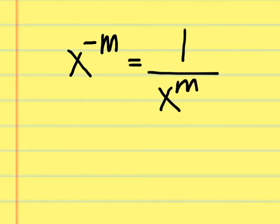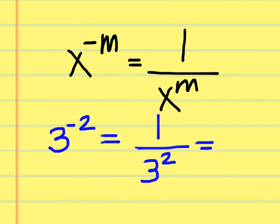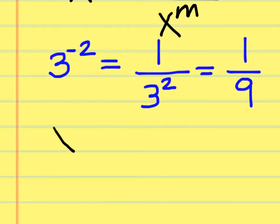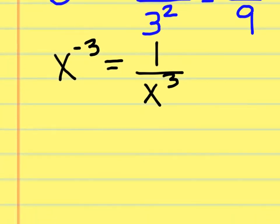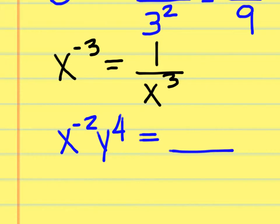Rule 5: negative exponents. This rule is very important because most answers won't be fully simplified if you forget it. Whenever you have something to a negative exponent, move that item and its exponent to the denominator and make the exponent positive. For example, 3 to the negative 2 equals one over 3 squared, which is one over nine. Similarly, x to the negative 3 equals one over x to the third.